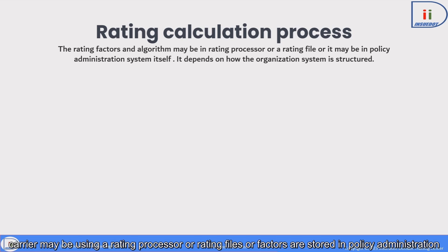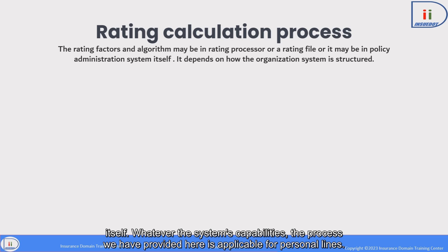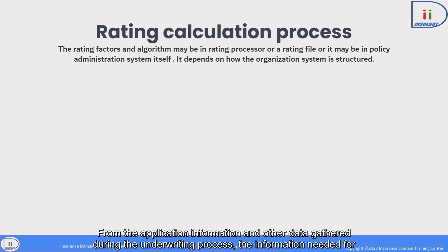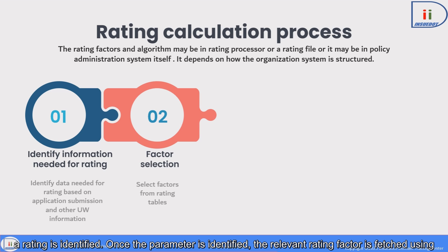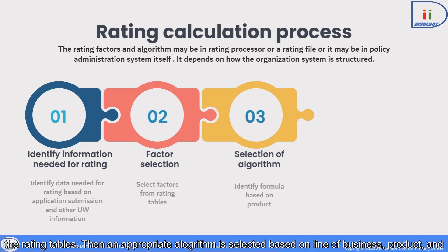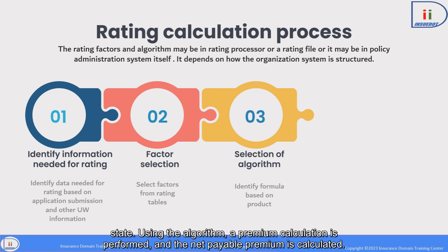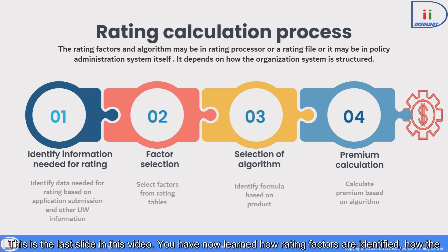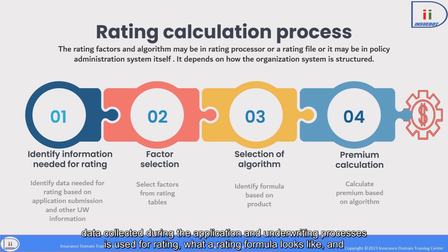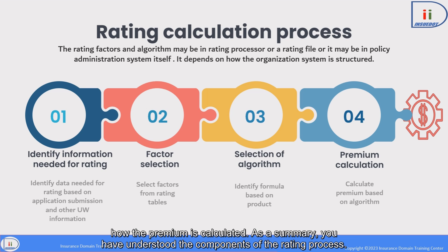As a summary of what we have learned, let us look at the rating calculation process. The carrier may be using a rating processor, rating files, or factors stored in the policy administration system itself. The process provided here is applicable for personal lines. From the application information and other data gathered during the underwriting process, the information needed for rating is identified. Once the parameters are identified, the relevant rating factor is fetched using the rating tables. Then an appropriate algorithm is selected based on line of business, product, and state. Using the algorithm, a premium calculation is performed and the net payable premium is calculated. You have now learned how rating factors are identified, how data collected during application and underwriting is used for rating, what a rating formula looks like, and how the premium is calculated.